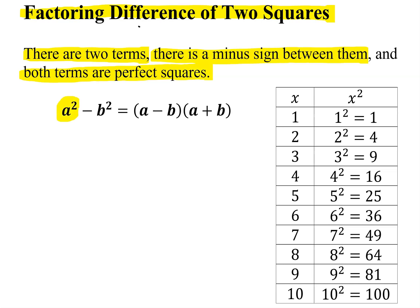So it looks something like a squared minus b squared, and it will factor into two binomials, a minus b times a plus b.